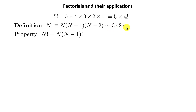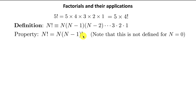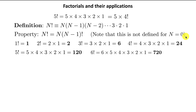This definition gives us the property that n factorial equals n times (n−1) factorial. This is only defined for n = 1, 2, 3, 4, 5, etc. — it is not defined for n equal to 0; we'll see later how to define it for that. Just for practice: 1! = 1, 2! = 2, 3! = 6, 4! = 4 × 6 = 24, 5! = 5 × 24 = 120, and 6! = 6 × 120 = 720.